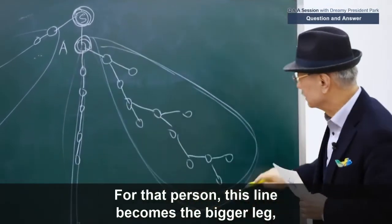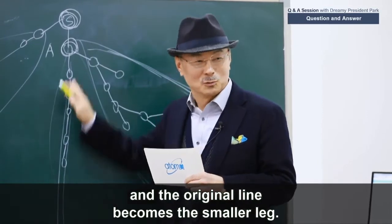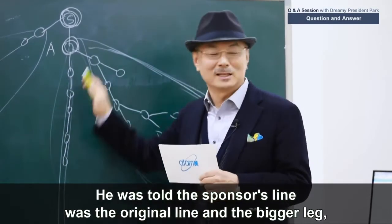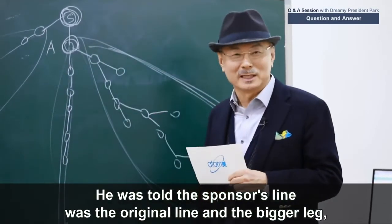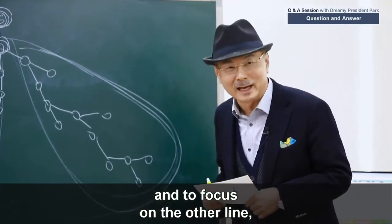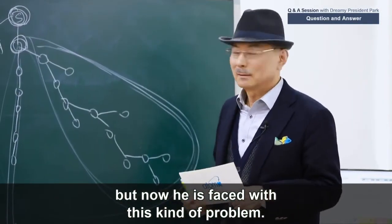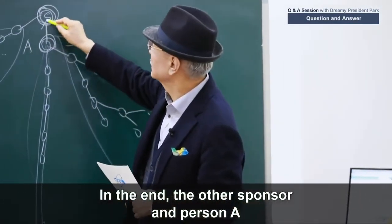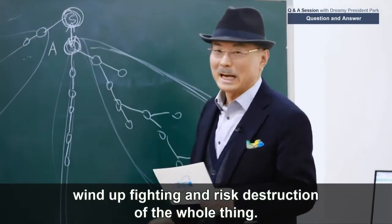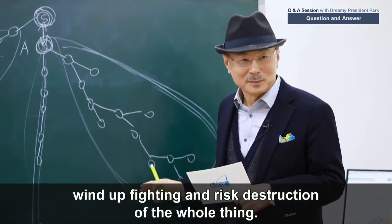For that person, this line becomes the bigger leg, and the original line becomes the smaller leg. He was told that the sponsor's line was the original line and the bigger leg, and to focus on the other line. But now he's faced with this kind of problem. In the end, the other sponsor and person A wind up fighting and risk destruction of the entire thing.